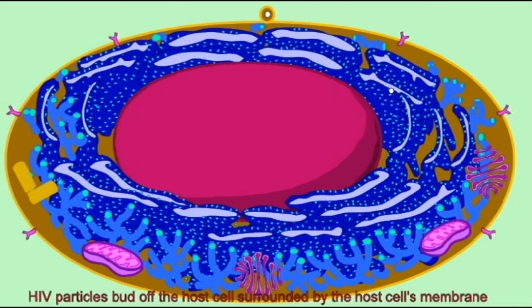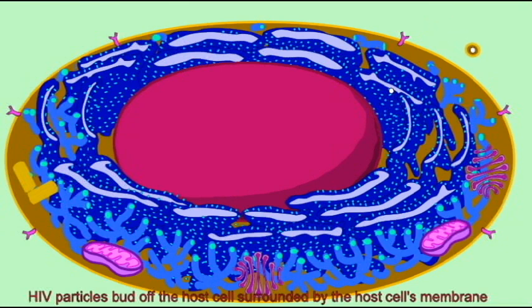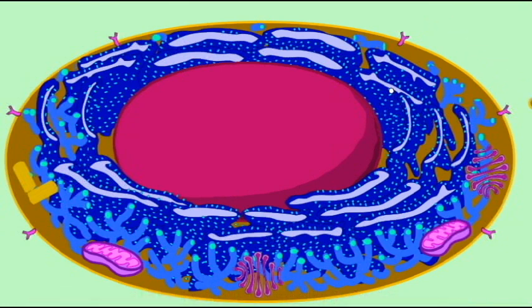As HIV particles travel through the human body, they are wrapped in a tiny piece of cell membrane from the human host cell that they had previously infected.